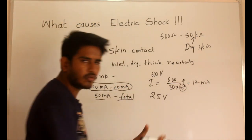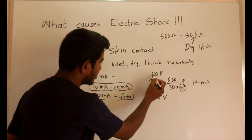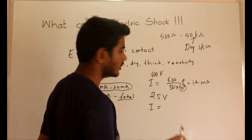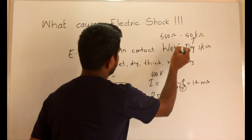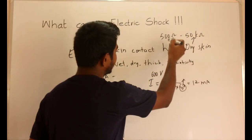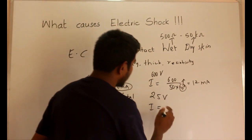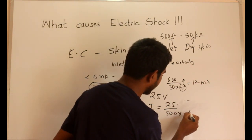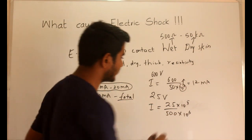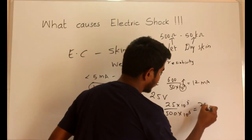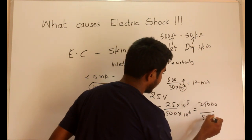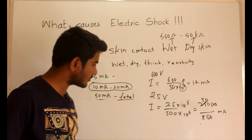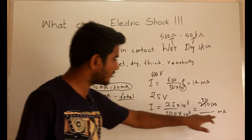Now similarly, consider a 25 volt line — a low voltage line, much lower than 600 volts. Here I will consider wet skin or a clammy hand. With wet skin, if the resistance is 500 ohms, then calculating 25 volts divided by 500 ohms — multiplying numerator and denominator appropriately — gives us 25,000 divided by 500 milliamperes, which equals 50 milliamperes.